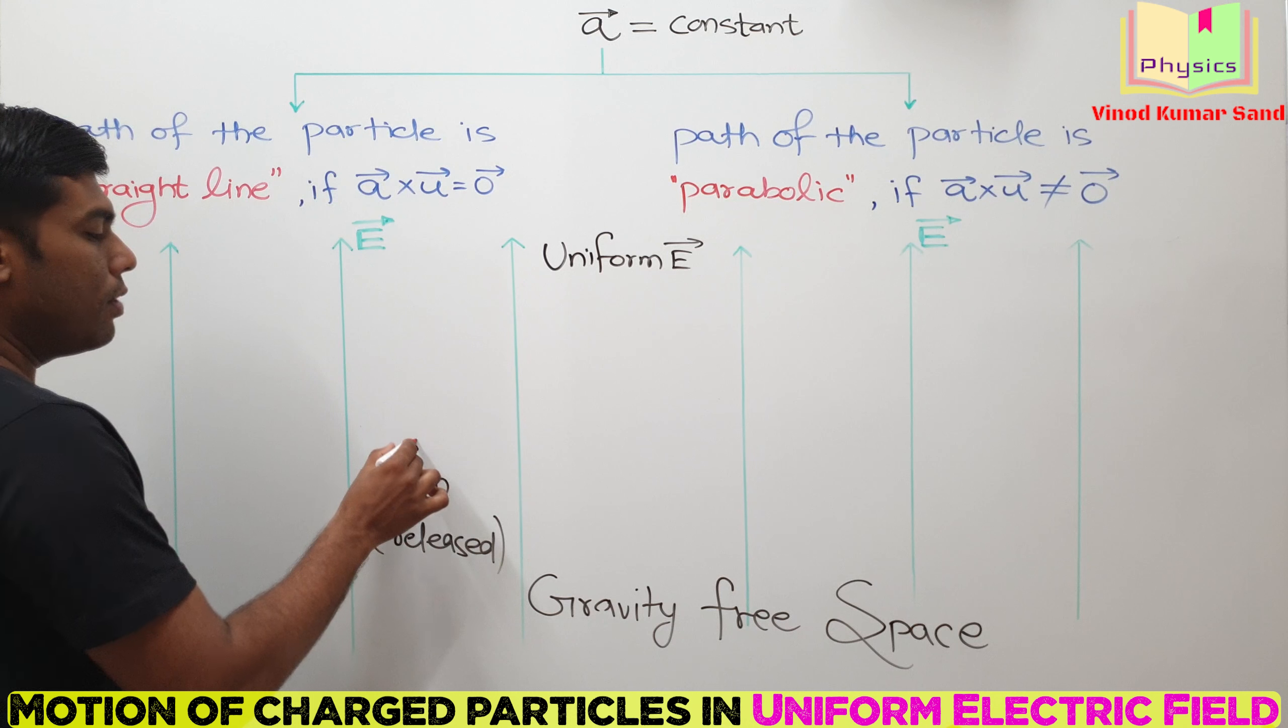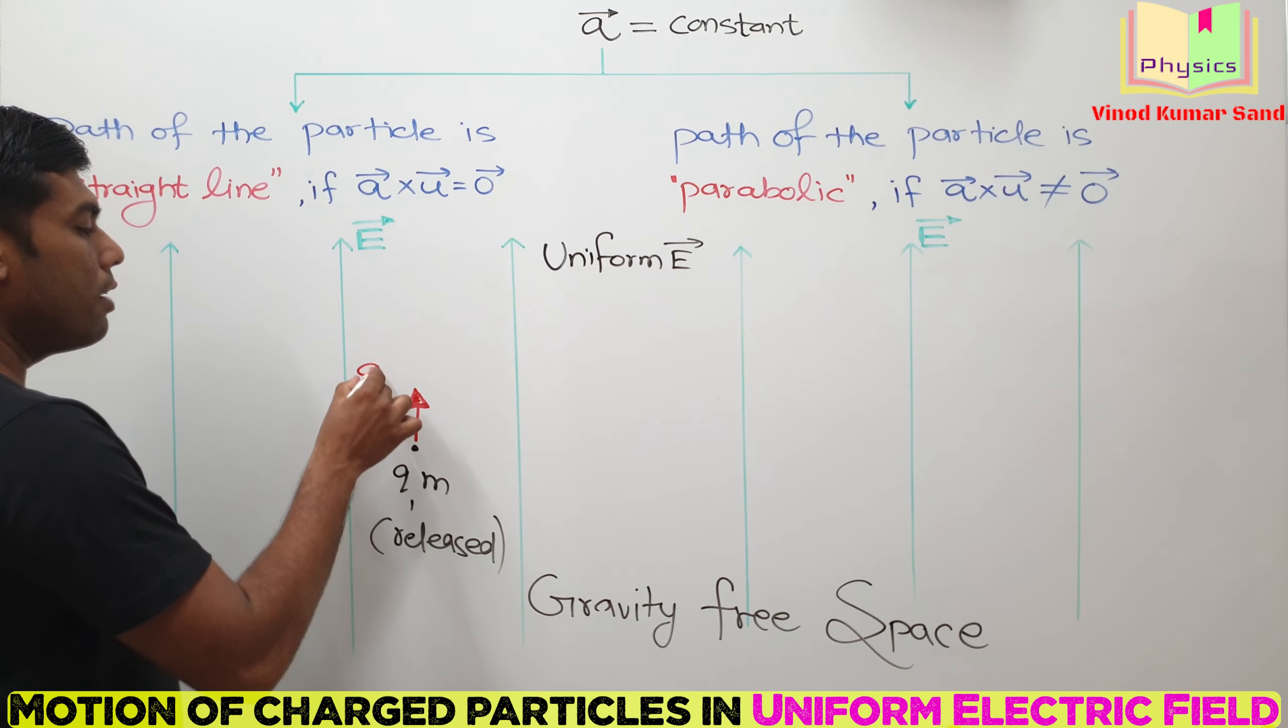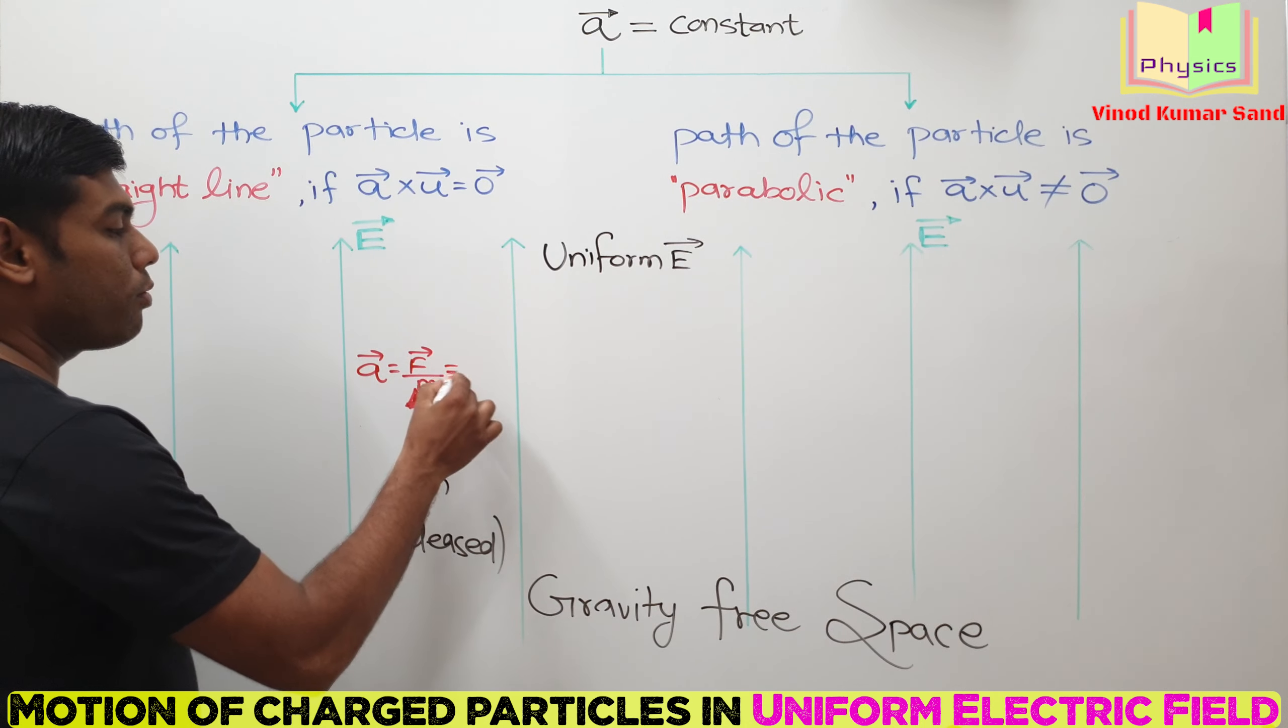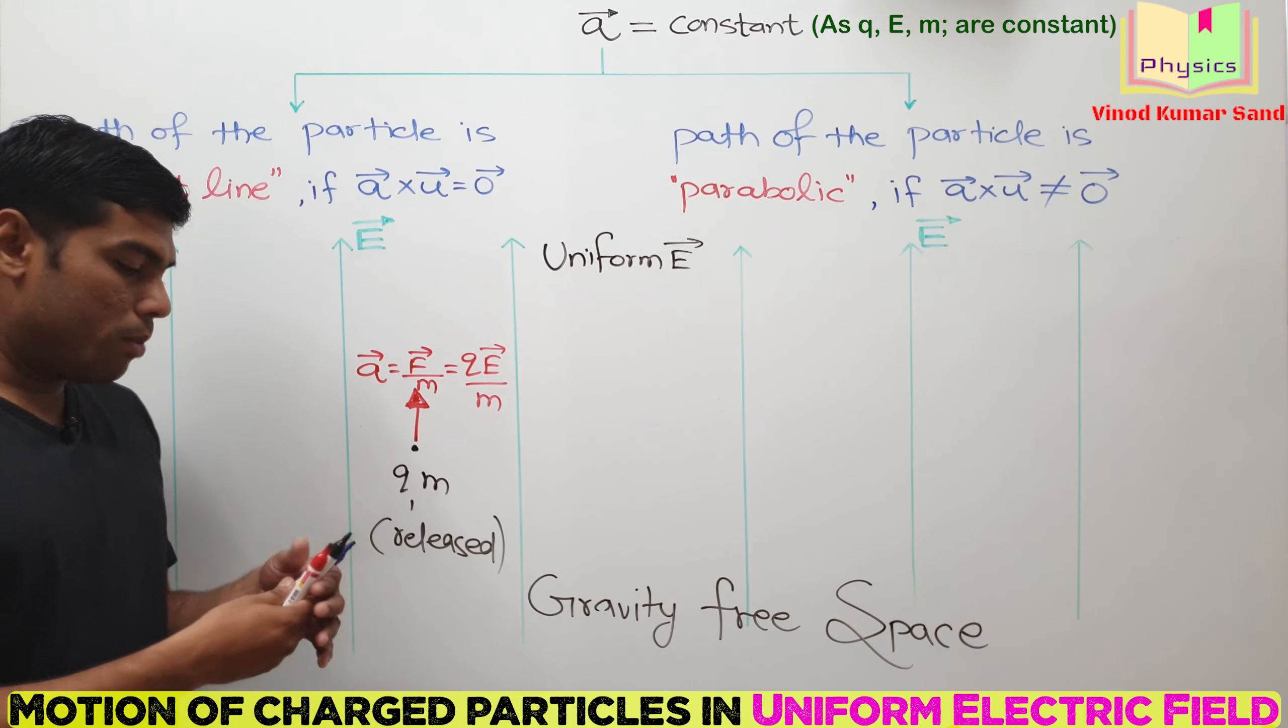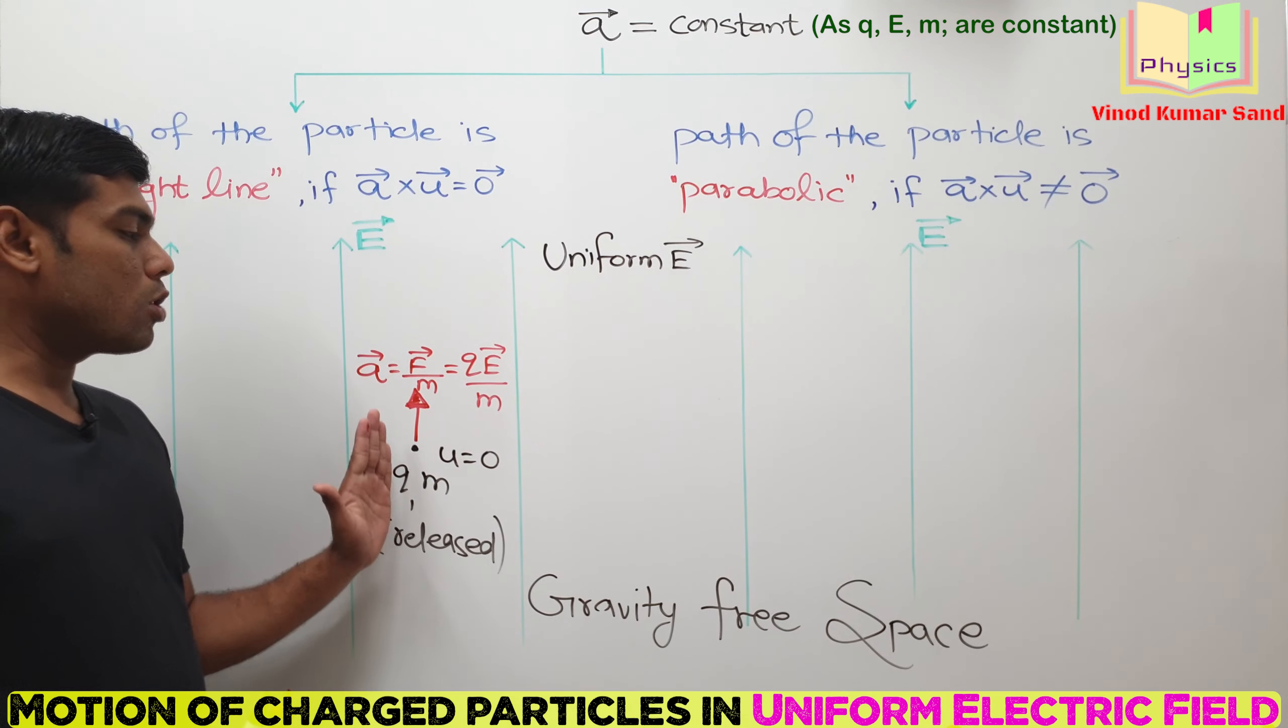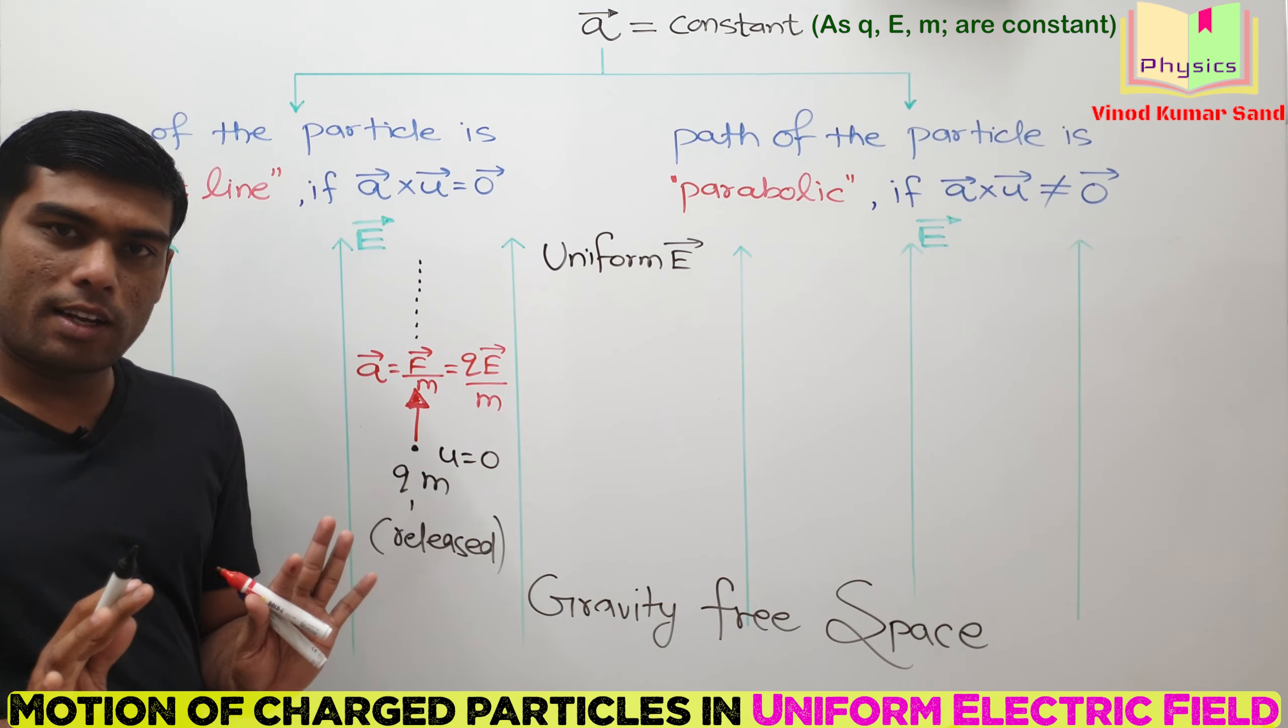This particle will have acceleration along the field. We are assuming the particle to be positively charged. A vector will equal F vector divided by the mass, and F vector will be Q times E vector. Now, particle starts from rest, its U is given as zero. Net force on the particle is vertically upward, so the particle will keep on moving straight.